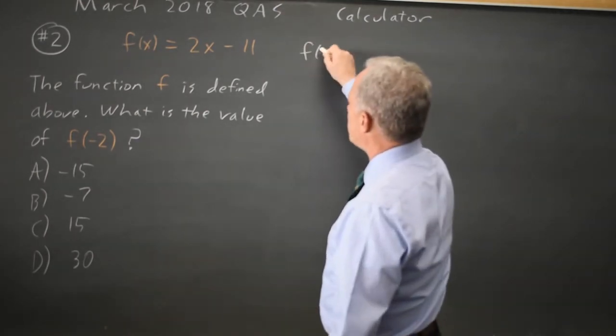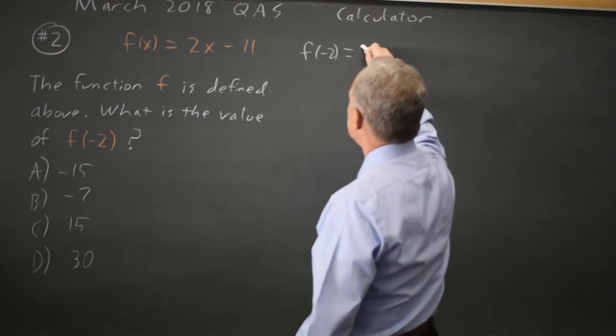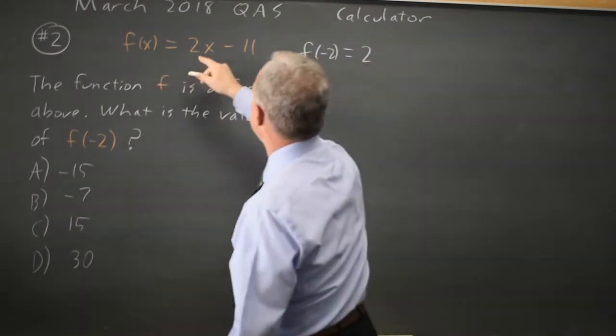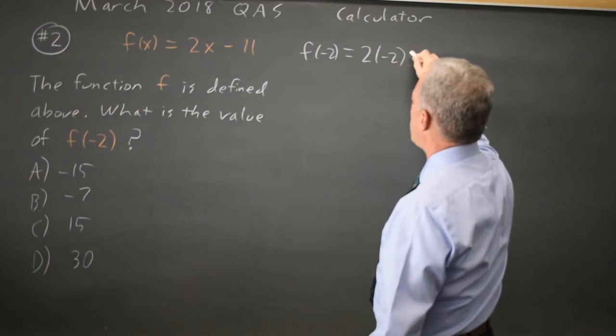So f of negative 2 means f says whatever is in the parenthesis, we take twice that number and then subtract 11.